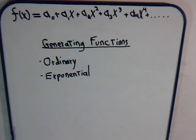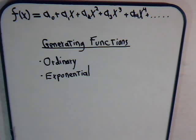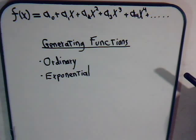We've spent the past several videos working with the binomial theorem, and what we're going to do in this video and the next several that follow is consider Taylor's series. That will enable us to derive a formula for the binomial expansion when we have negative exponents. The reason we're going through these is that in the next videos we're going to start dealing with generating functions, and we need this background to handle them.